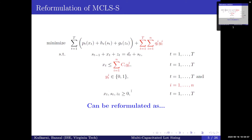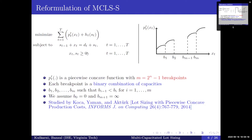Another interesting observation is that we can remove the capacity constraints in the MCLSS and reformulate the whole problem as an uncapacitated problem. But now the production cost function is a piecewise concave function with m different breakpoints, where each breakpoint is a binary combination of the capacities. This reformulation was studied by Kosha and others in 2014, and we observe that there are an exponential number of breakpoints.